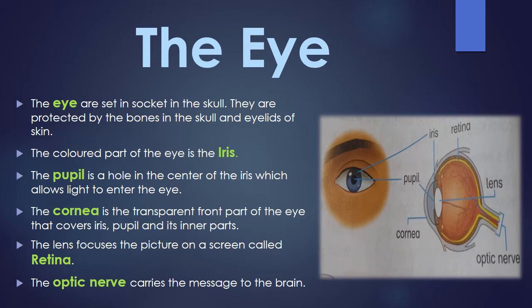The lens focuses the picture on a screen called the retina. When you see something, light enters through the small hole known as the pupil. From the pupil it goes into the iris, and from the iris it moves to the lens. From the eye lens, the light goes to the back portion which is known as the retina.